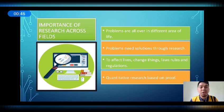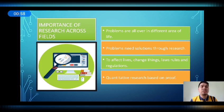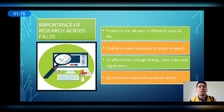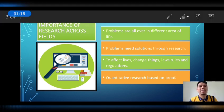Another reason is to affect lives, change things, laws, rules, and regulations. The findings of quantitative research can influence leaders or lawmakers' decisions for crafting and implementing laws for the safety and welfare of the greater majority. For example, a community with high cases of COVID-19 positive patients is mandated by law to be under ECQ — Enhanced Community Quarantine — while cities with less or zero cases will be under General Community Quarantine, where some businesses and public and private offices are already allowed to operate.